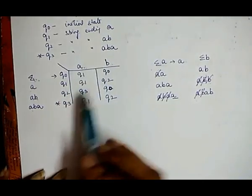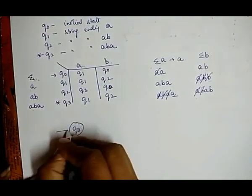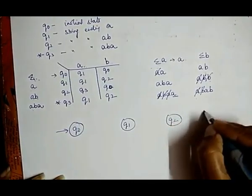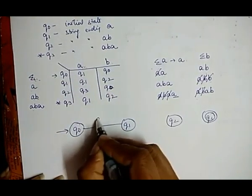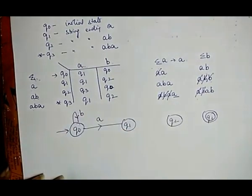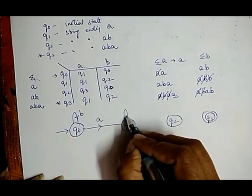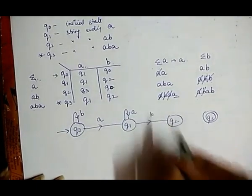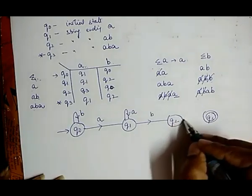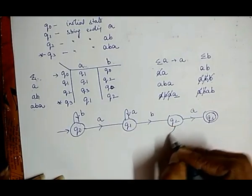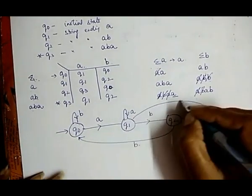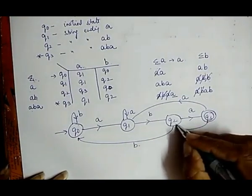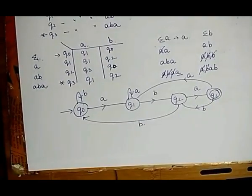According to this transition table, we generate the DFA. Q₀ is the initial state, Q1 and Q2 are intermediate states, and Q3 is the final state. On Q₀ with A, it moves to Q1; Q₀ with B stays at Q₀. Q1 with A stays at Q1; Q1 with B moves to Q2. Q2 with A moves to Q3; Q2 with B moves to Q₀. Q3 with A moves to Q1; Q3 with B moves to Q2.